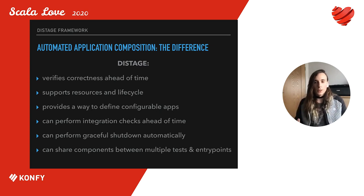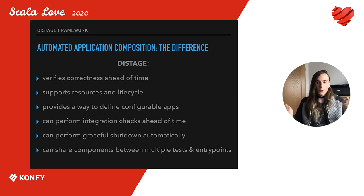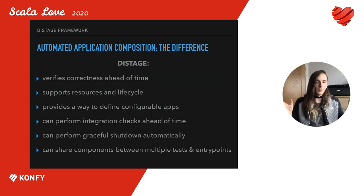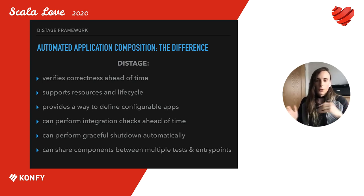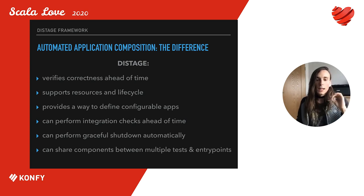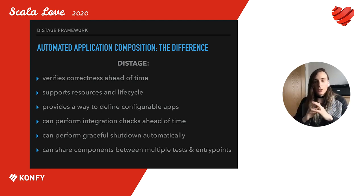So we just had a quick look at D.Stage features which should let us write faster and better tests and applications. To be short: D.Stage computes all wirings ahead of time, so unlike Guice you're not going to have unexpected exceptions because it can't find a dependency — you can compute it ahead of time. It supports resources and resource lifecycles. It provides a way to define easily configurable apps. It does integration checks before performing any effects so your application can fail as fast as possible. It can gracefully shut down your application and correctly share components between multiple tests and application entry points.